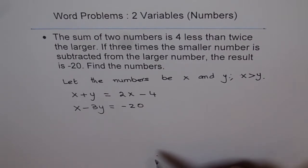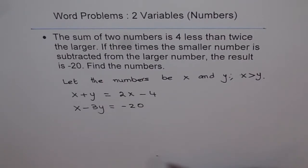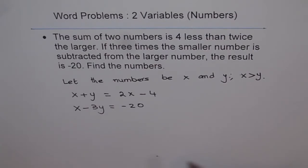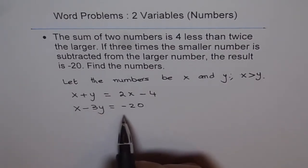These are two-variable problems, so we have two variables. To solve equations with two variables, you should have at least two equations to find unique solutions. We have two equations, so we can solve for these two variables. We can adopt either the substitution or elimination method. Before moving forward, let me simplify both equations.